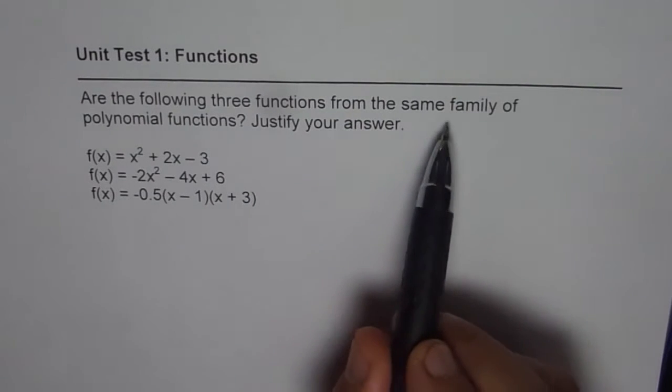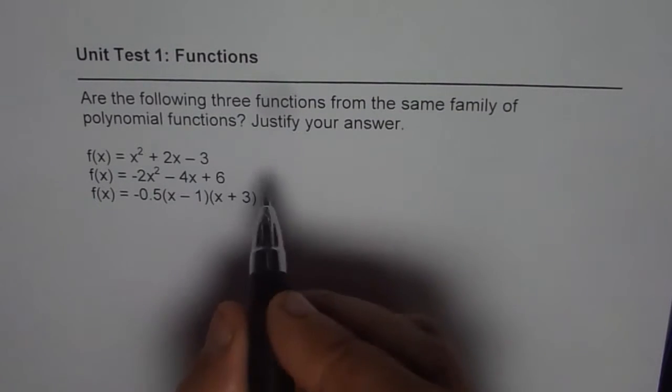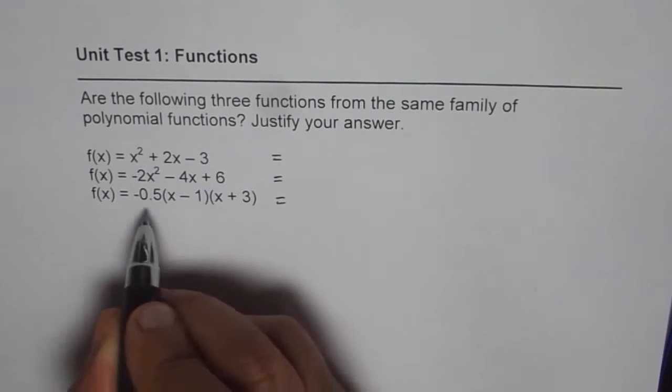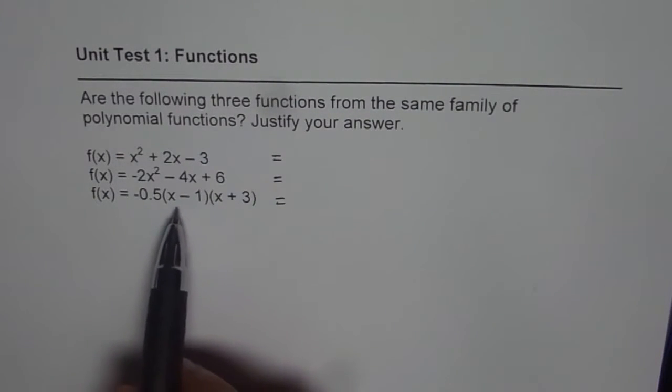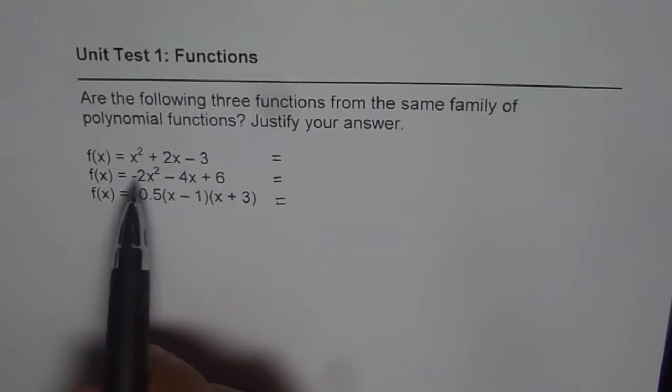Normally, when we are referring to the same family, we are actually looking into x-intercepts. So, let us find the x-intercepts for these three functions. The last one is already given to you in the intercept form. It shows that two intercepts are at x equals to 1 and x equals to minus 3. Well, in the test paper, it is not going to be that simple.